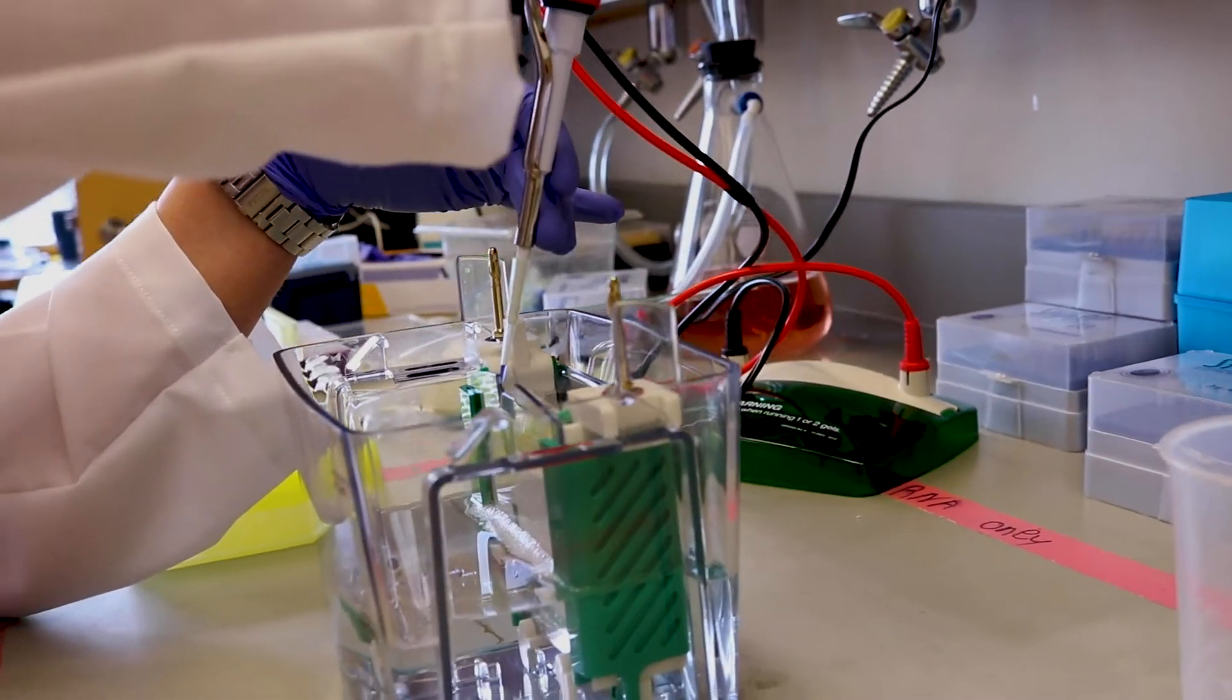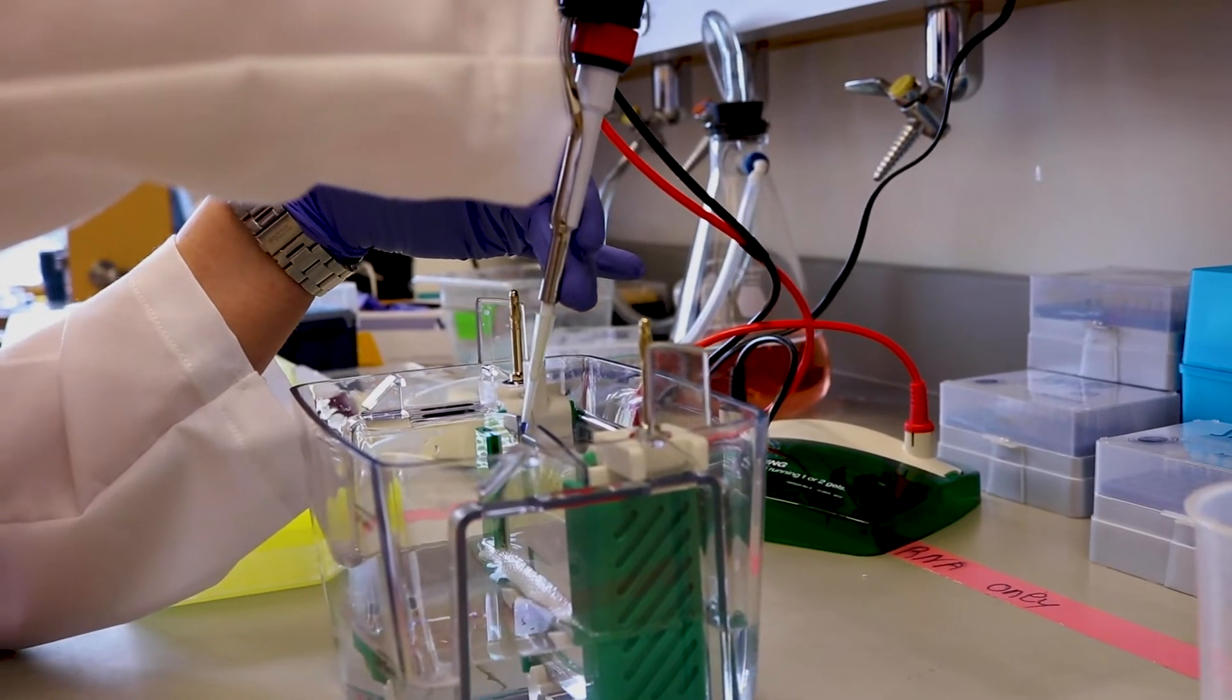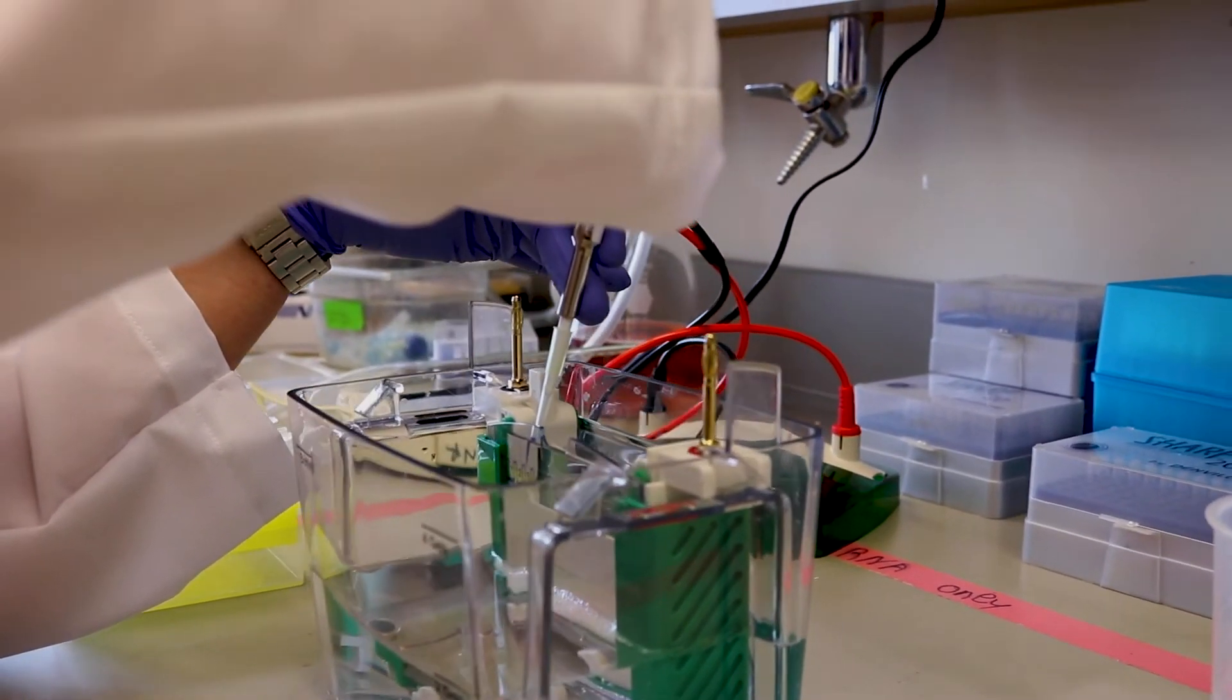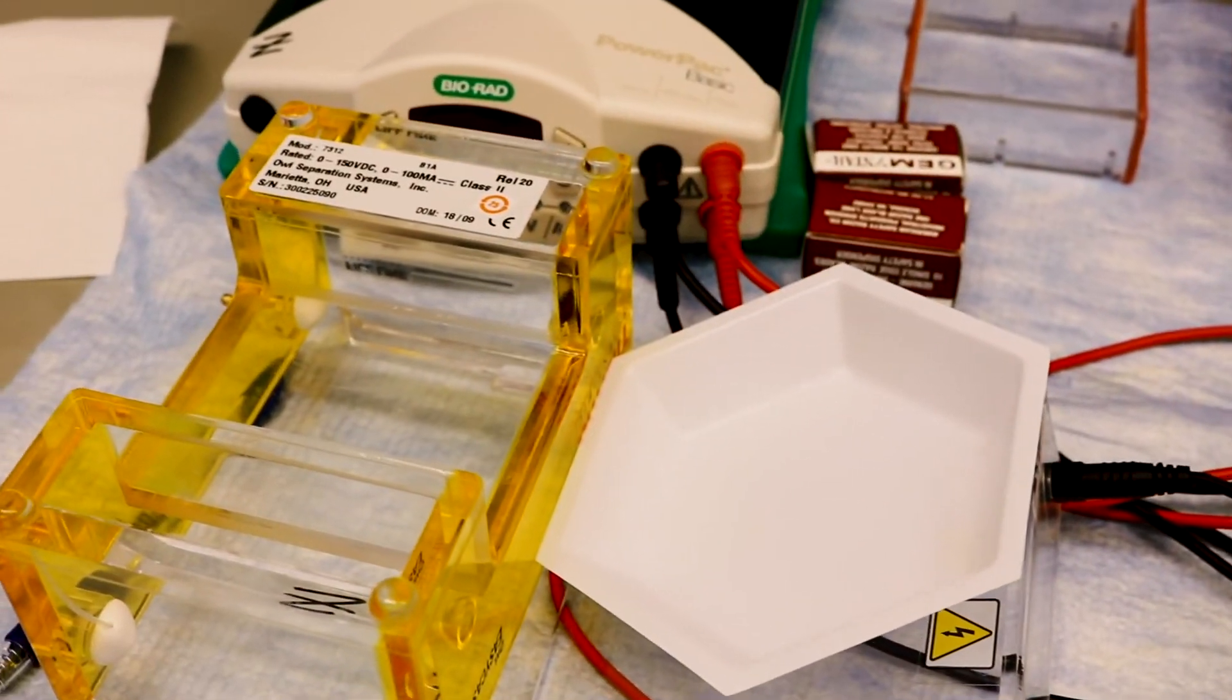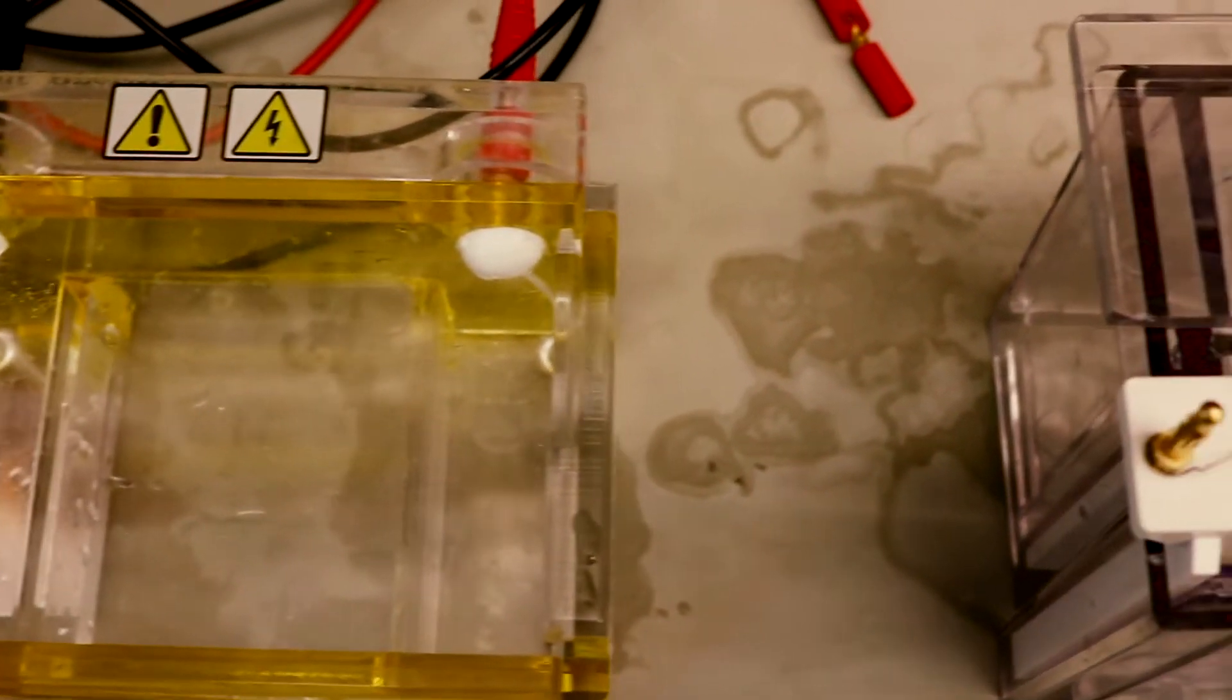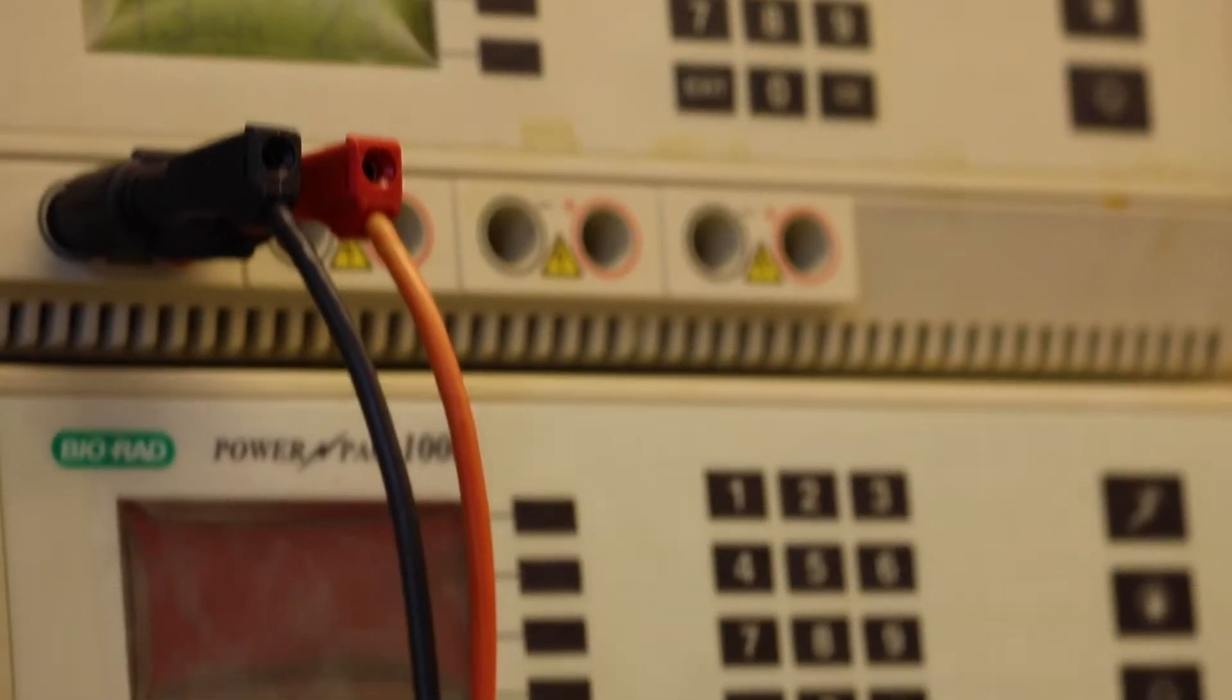For the Western, the gel is stood up and you take your pipette and you're loading over top. For an agarose DNA gel it's laying down, but it's a very similar process of just letting it release slowly into the well. And then as soon as you apply the voltage, everything will start running down.